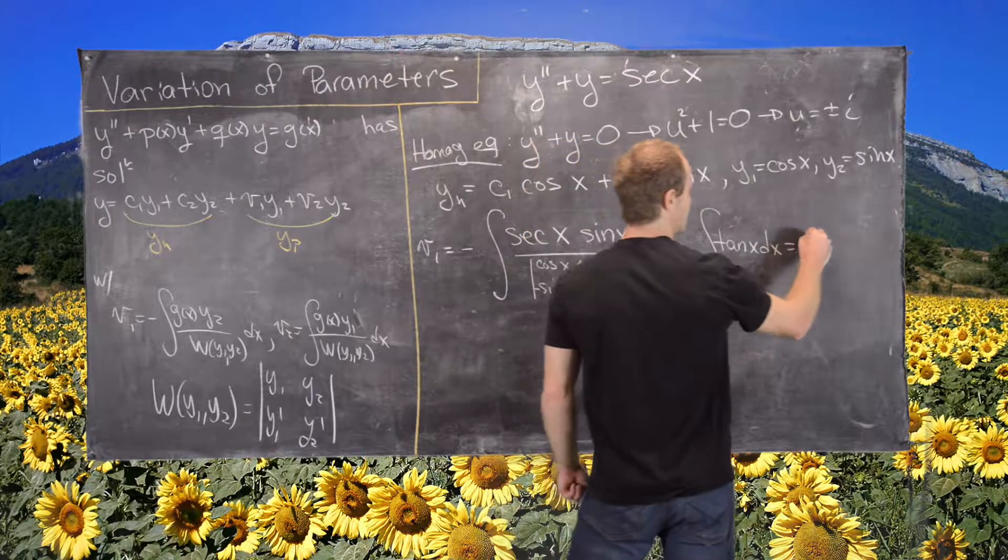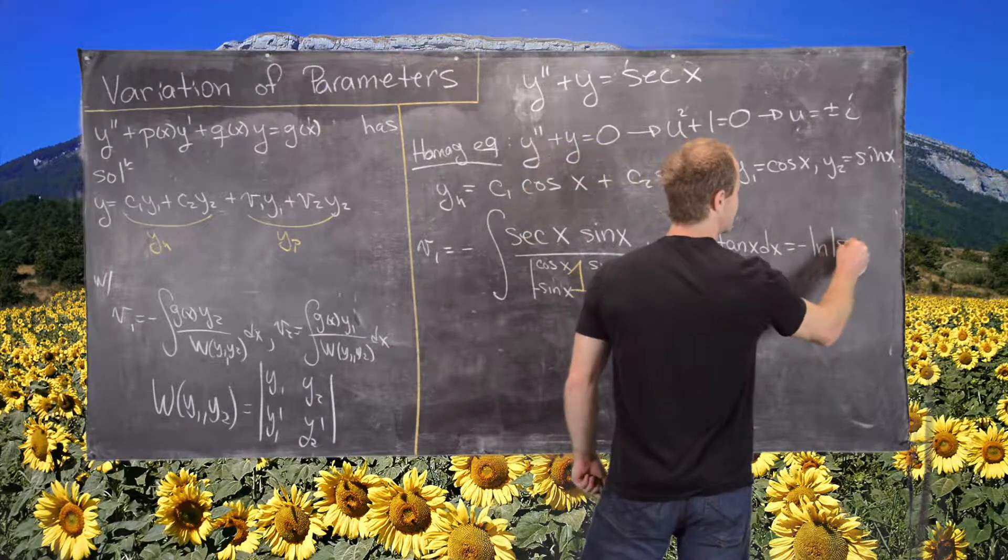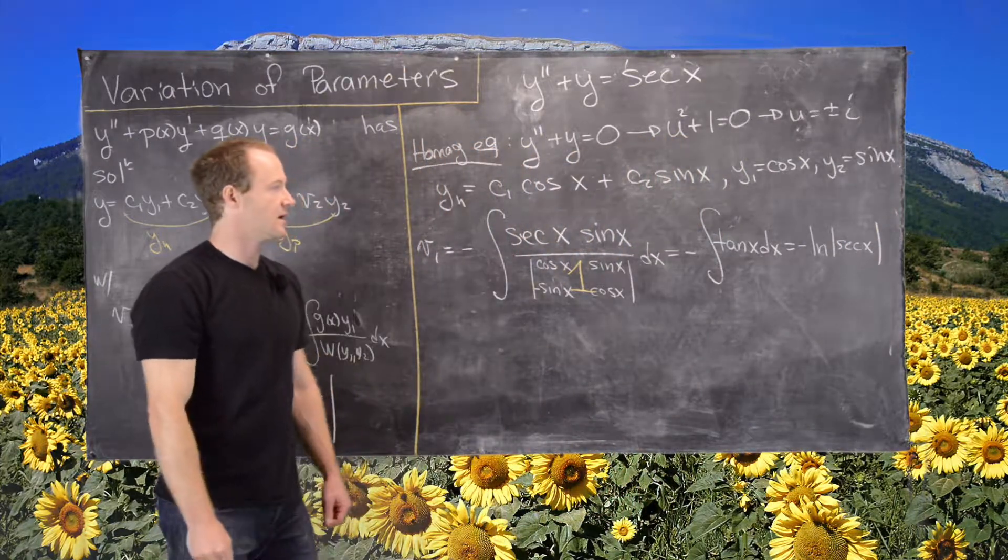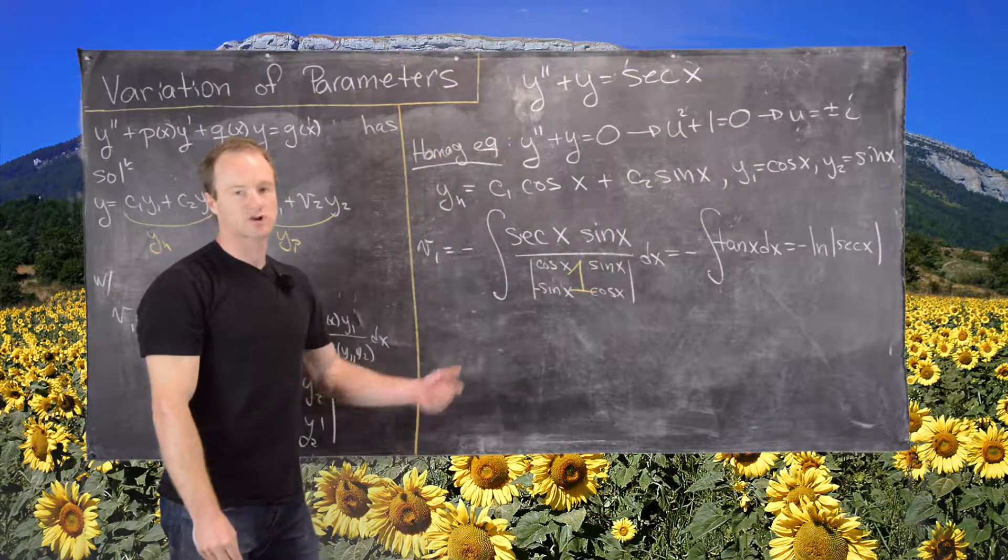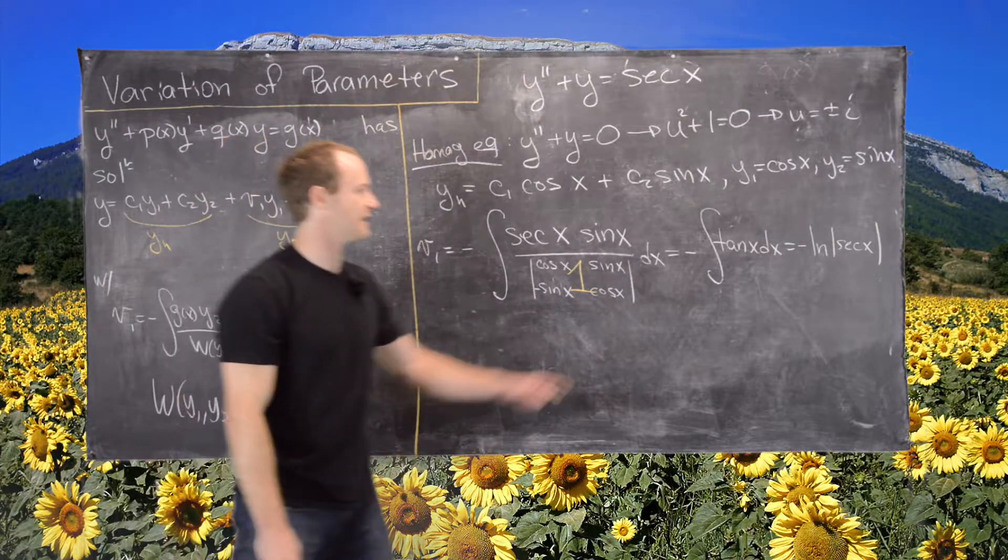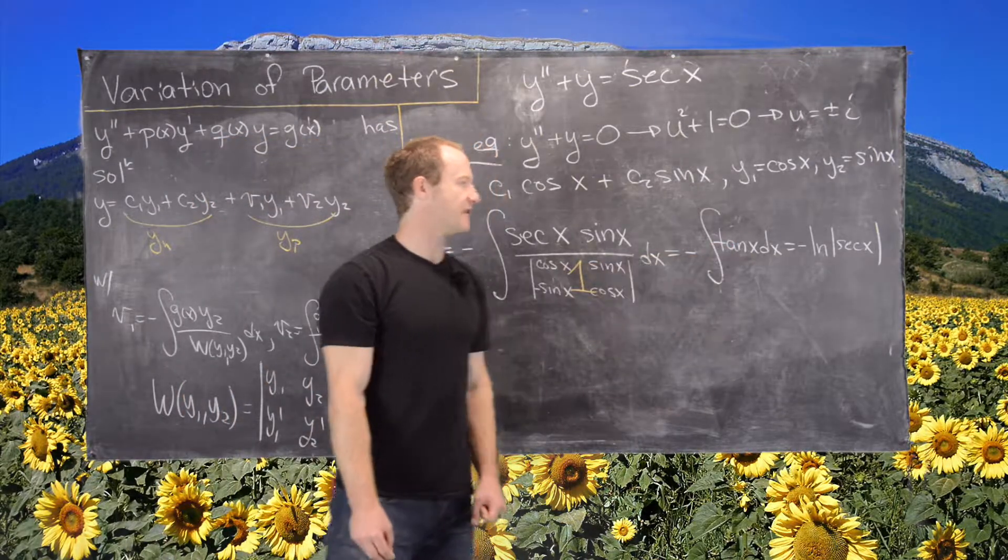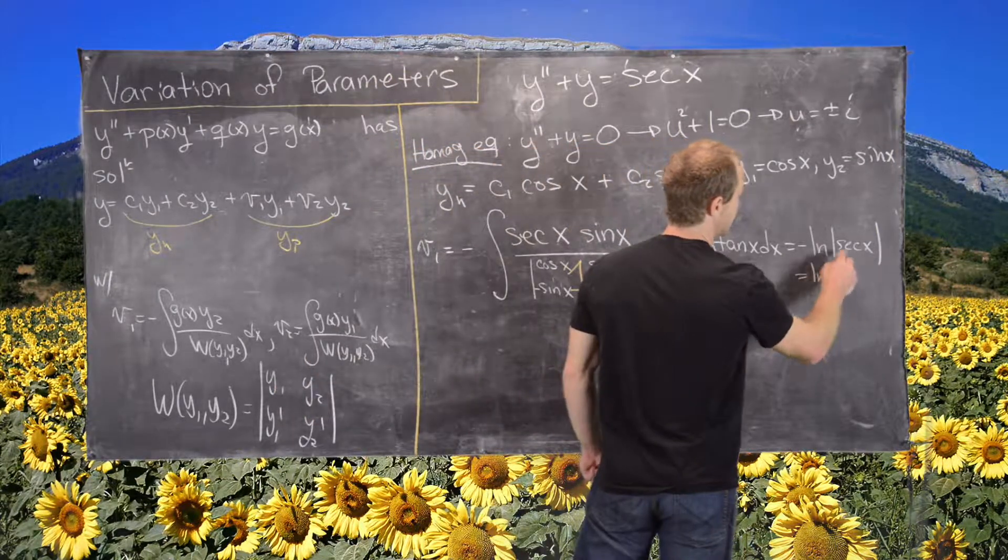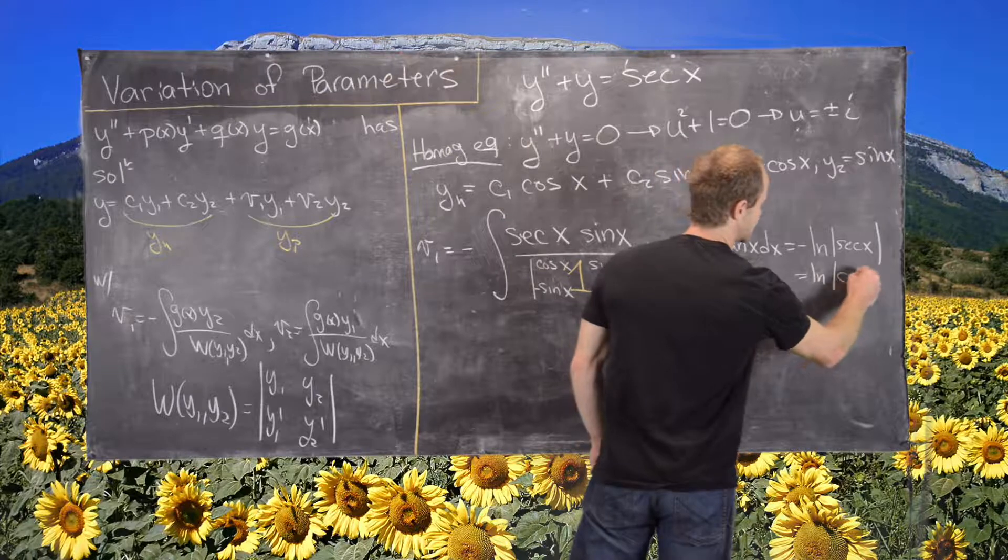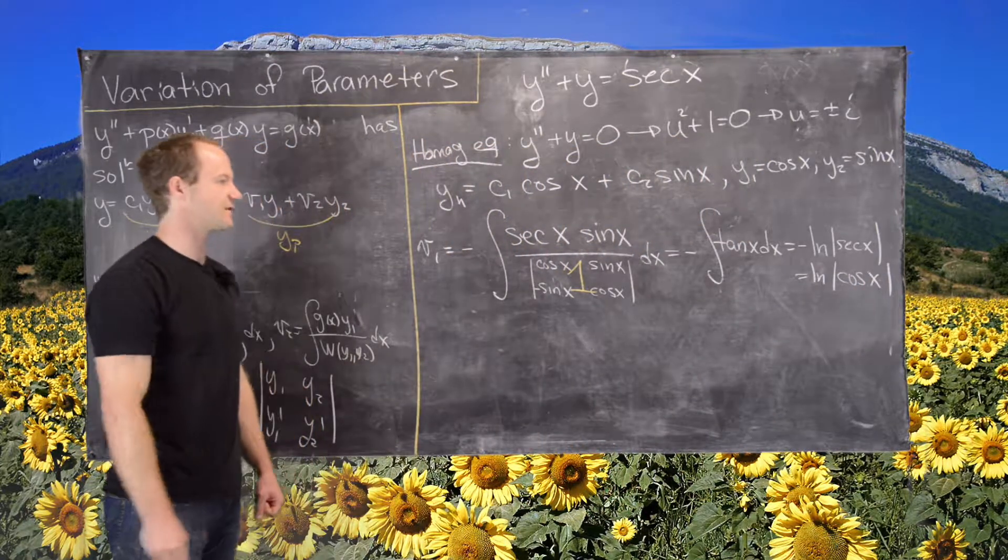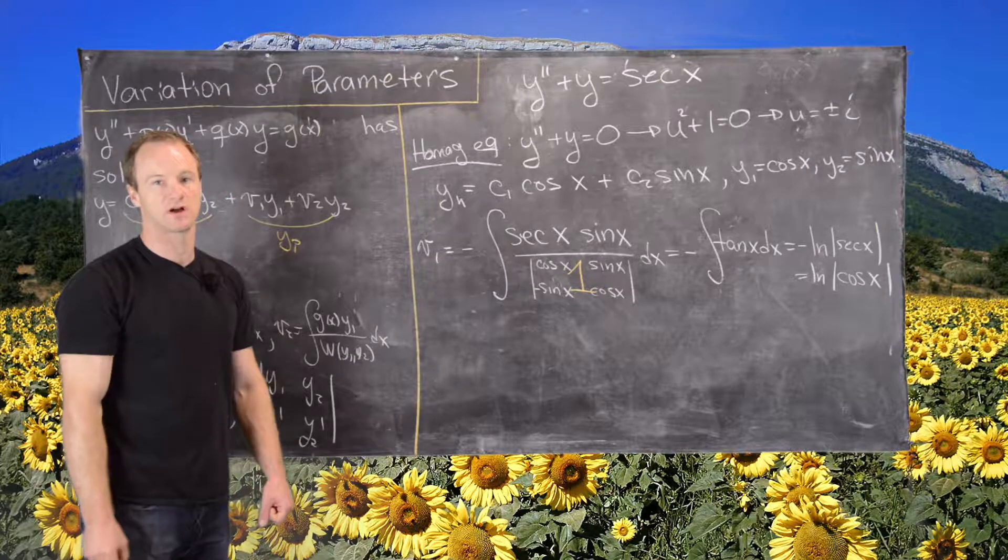And then that will be negative the natural log of secant of x, just like looking up on an integral chart or just recalling from calculus 2 the antiderivative of tangent. And then we can bring this negative inside the natural log, make that natural log of secant to the negative 1, which is the natural log of cosine. So there's our function v1 is the natural log of cosine.